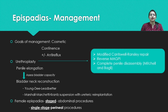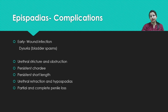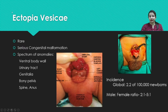For female epispadias, previously staged procedures with an abdominal approach were used. However, in the last few decades there has been a remarkable change, with only single-stage procedures being done via the perineal area, achieving post-operative continence rates reaching up to 90 percent. Various complications after epispadias repair include wound infection, dysuria, urethral strictures or obstruction, persistent chordee, short penile length, and rarely urethral retraction. With repeated surgery, partial or complete penile loss can also occur.